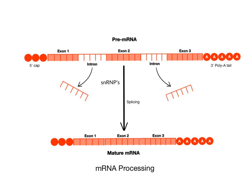So in conclusion, here is the functional final draft of mature messenger RNA that consists of only the exons. It is threaded out through the nuclear pore and into the cytoplasm, where it will begin the process of translation.